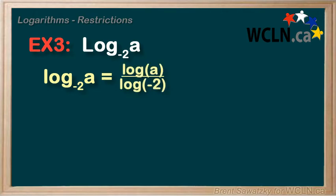And we can already see our problem. We know, based on our restriction around a, that plugging log negative 2 into the calculator will cause an error. And so, it makes sense that we have to restrict our base to be positive.